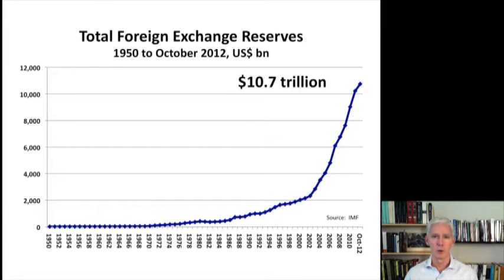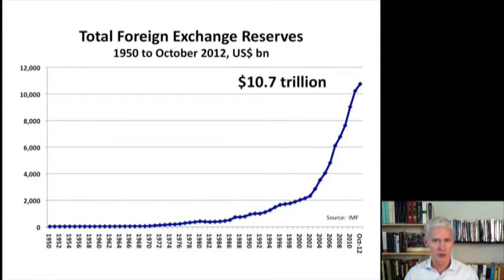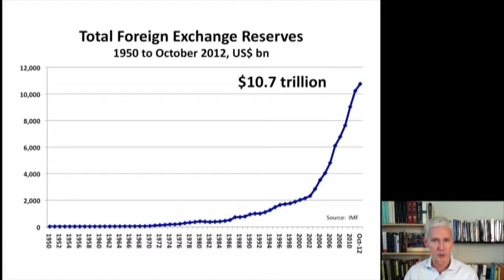We've seen this chart before — total foreign exchange reserves, $10.7 trillion. These dollars were accumulated by foreign central banks in the trade surplus countries. The question is, what did they do with these dollars once they had accumulated them? And the answer is, they had to invest the dollars into U.S. dollar-denominated assets of one kind or another in order to earn interest on the dollars. So that's what they did.